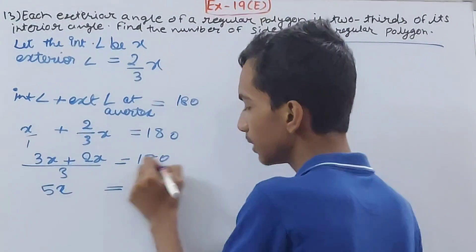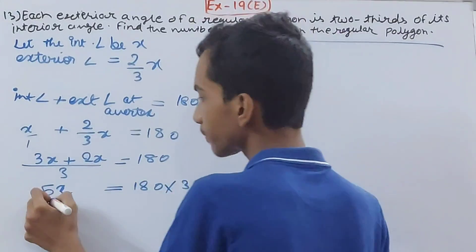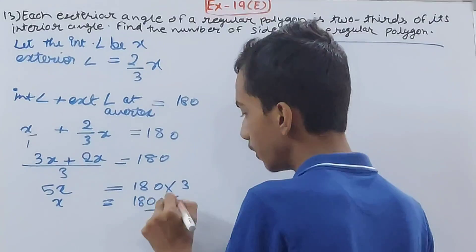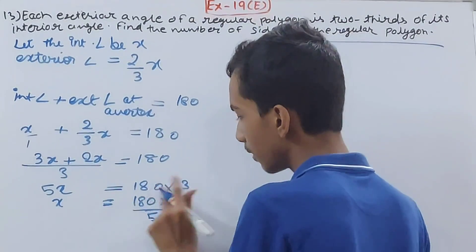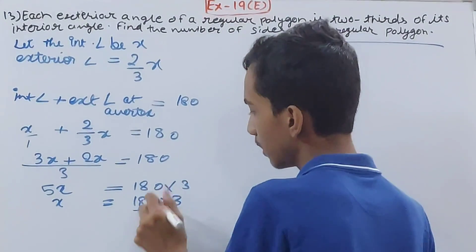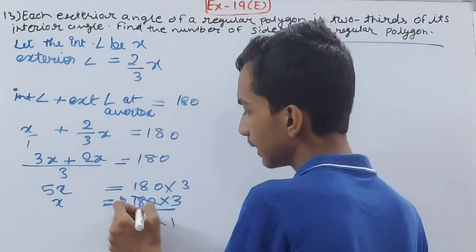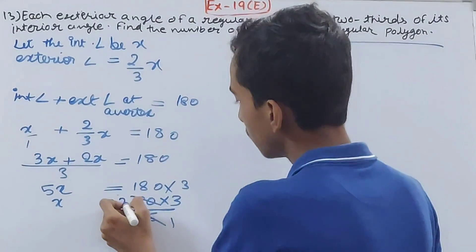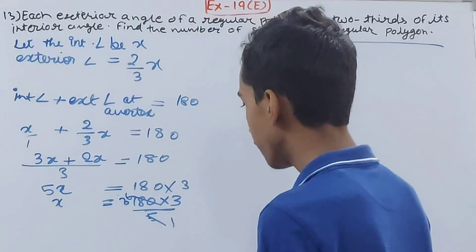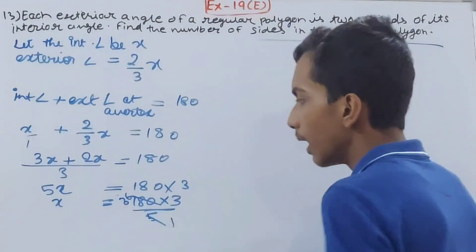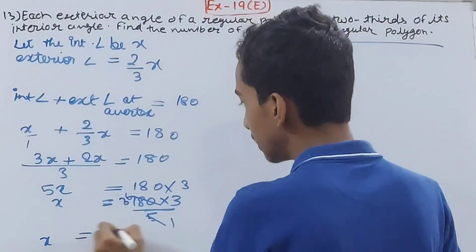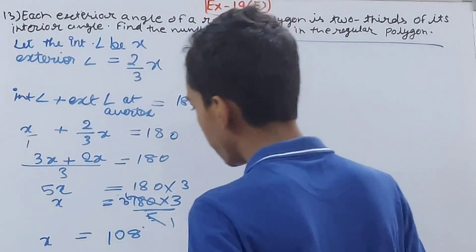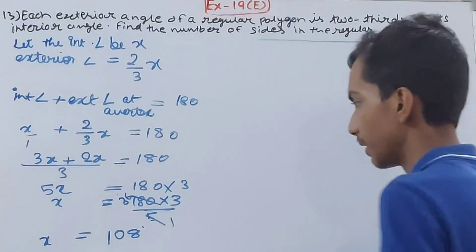Let's send this 3 to the other side. So x equals 180 × 3/5. Cancel this 180, how many times will it go by 5? 36 times. So now x will be equal to 6 × 3, which is 18, and 1 carried over, which is 108 degrees. So x equals 108 degrees.